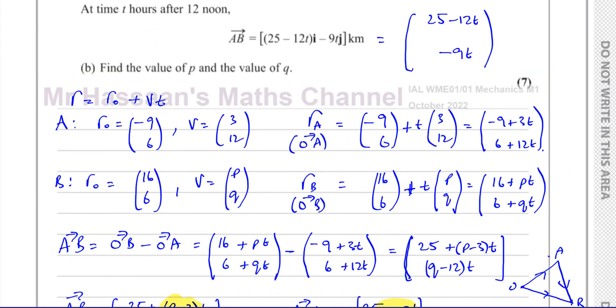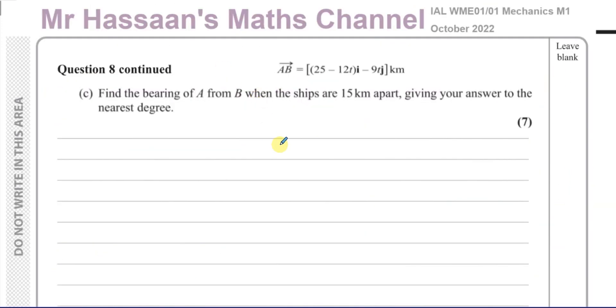Now for part C. It says: find the bearing of A from B when the ships are 15 kilometres apart, giving your answer to the nearest degree.